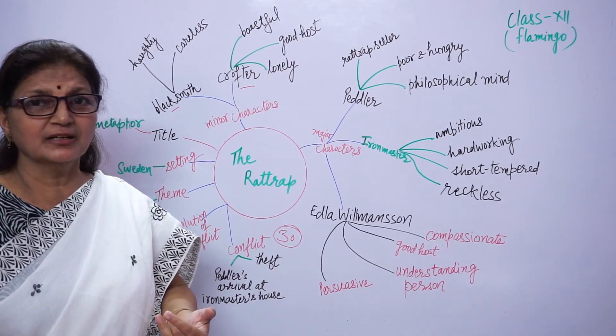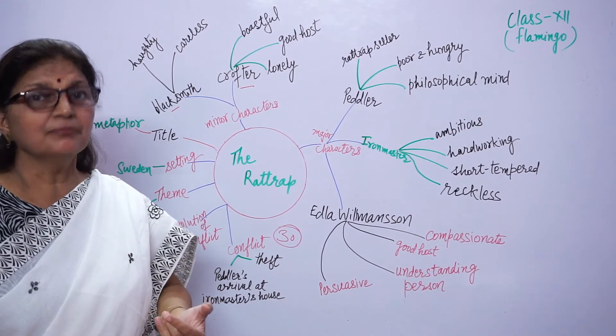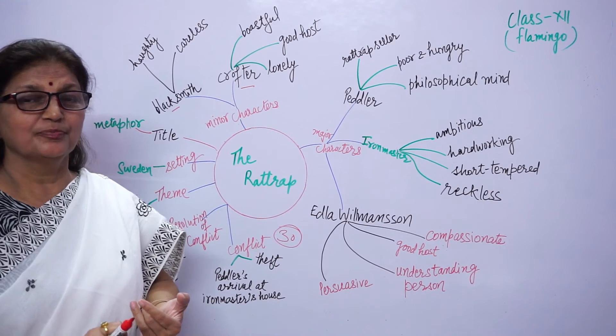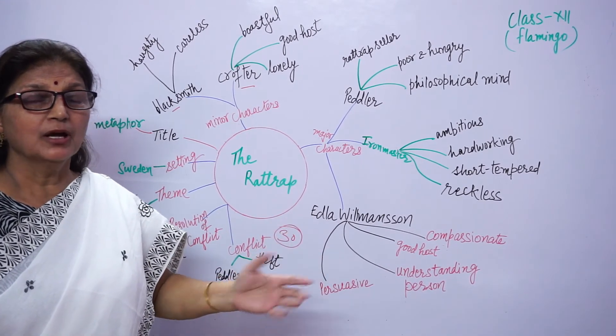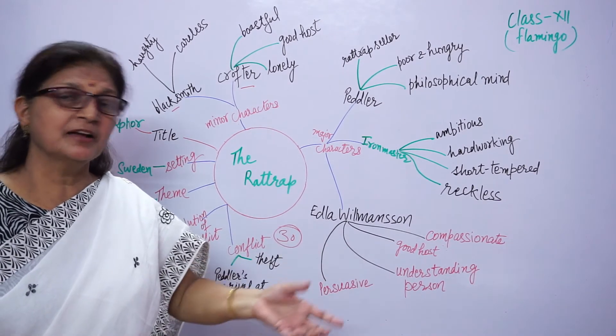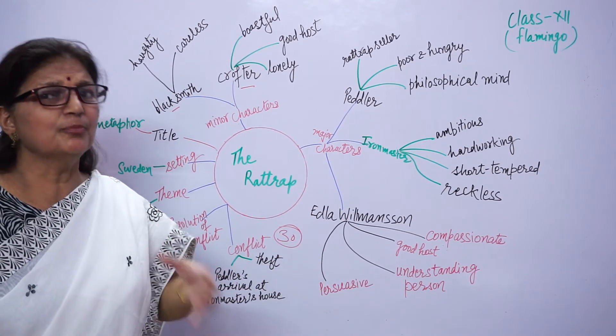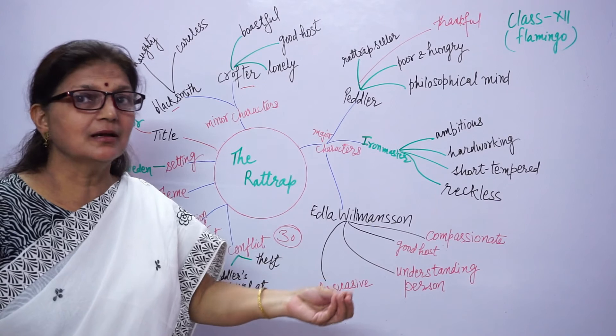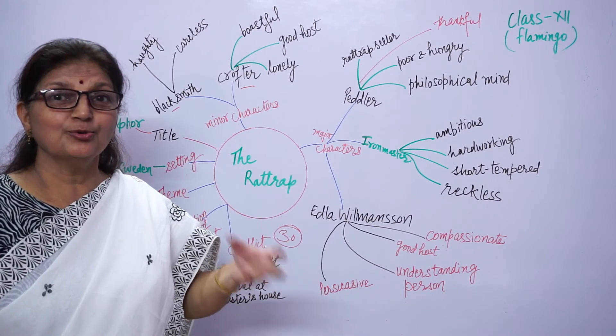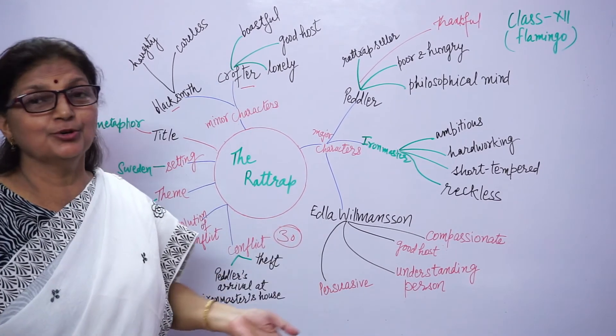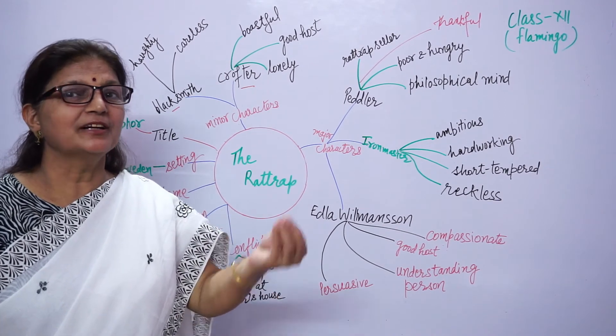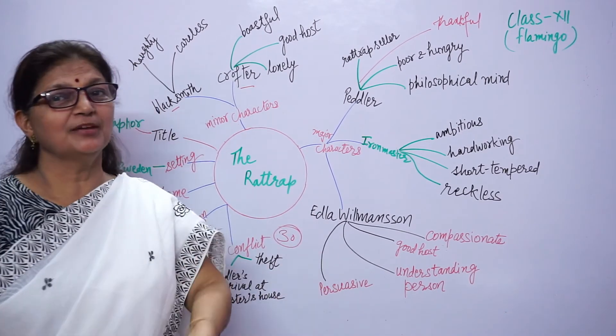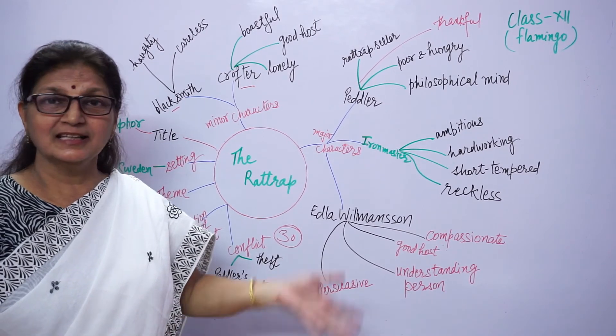He returns the money of the crofter, the 30 kronor. He leaves a small rat trap as a gift to Edla, and he writes a letter also, about how Edla saved him from going down in life, how she saved him from becoming a bigger criminal. He is a thankful person also. And he tries to repay the debt, Edla's debt. He tries his best to repay her kindness by giving her a small rat trap as a gift. Whatever he had, he wanted to give something in return. Edla did good, so he also wanted to give something good in return.